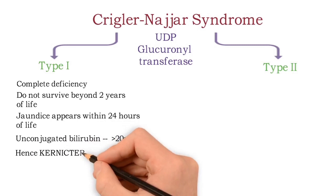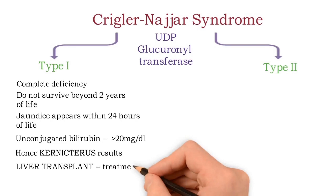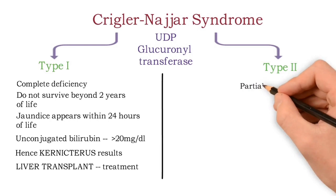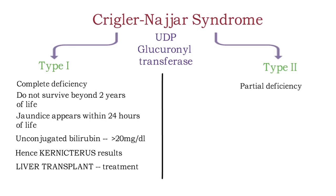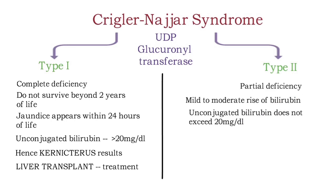In Crigler-Najjar type 1, liver transplant is the only available treatment. In contrast, type 2 is a milder form as there is partial deficiency of this enzyme — only the second stage of conjugation is deficient. There is only mild to moderate rise of bilirubin; unconjugated bilirubin does not exceed 20 mg per deciliter. Treatment with phenobarbital usually improves the jaundice. So in Crigler-Najjar syndrome, unconjugated (indirect) bilirubin is increased.